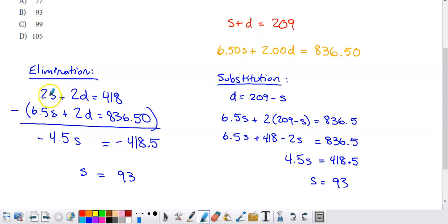So I multiplied this top equation by 2. If I do that, I get 2S plus 2D equals 418. You might remember the reason why we want to do that is because I need, in front of the variable I'm trying to eliminate, I either need matching or opposite coefficients. When they're matching, like they are here, positive 2D and positive 2D, I'm going to subtract the second equation from the first one.